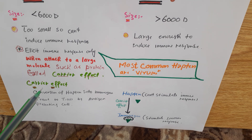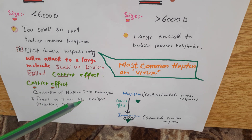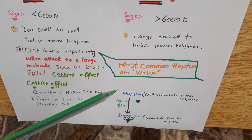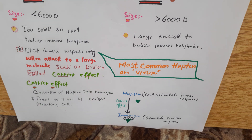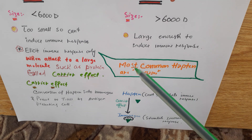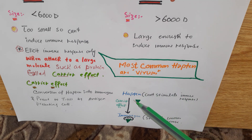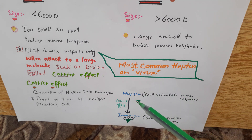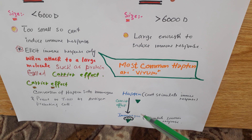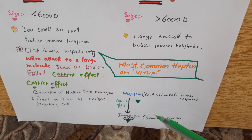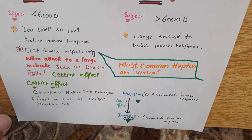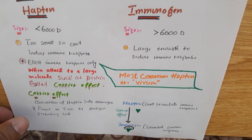Here you can see: this is a carrier protein, and this is hapten. This hapten cannot stimulate the immune response. But if this hapten binds with a carrier protein — the black one is the carrier protein — then this is called immunogen and it can stimulate the immune response.